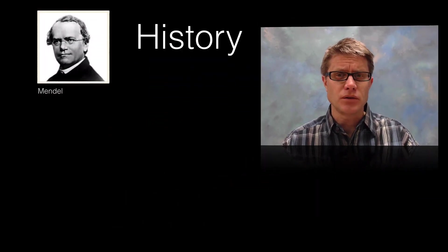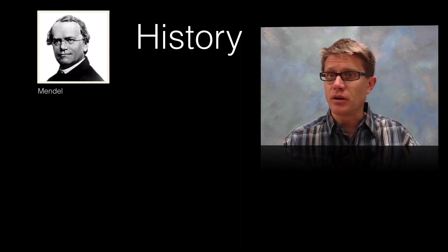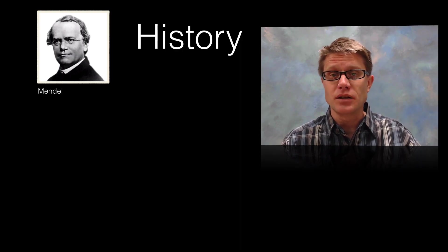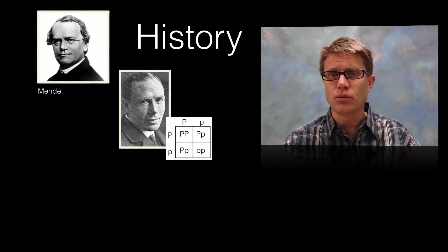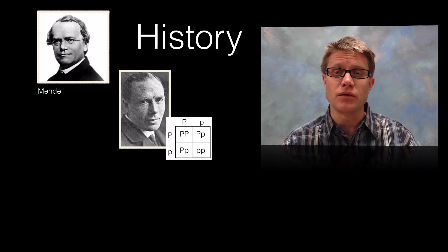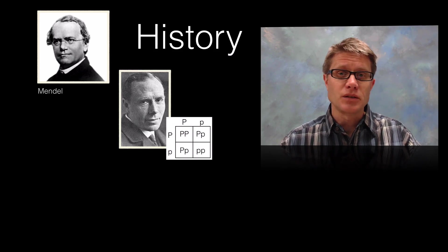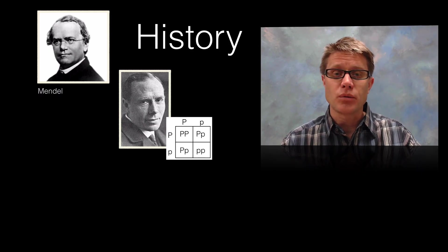And so we have to start with a little bit of history. Remember Mendel had come up with all of these laws, basic laws of Mendelian genetics and they were lost. And then they were discovered about a hundred years ago. And so Reginald Punnett was one of those who found them. And he started developing these Punnett squares as an easy way to work out problems.